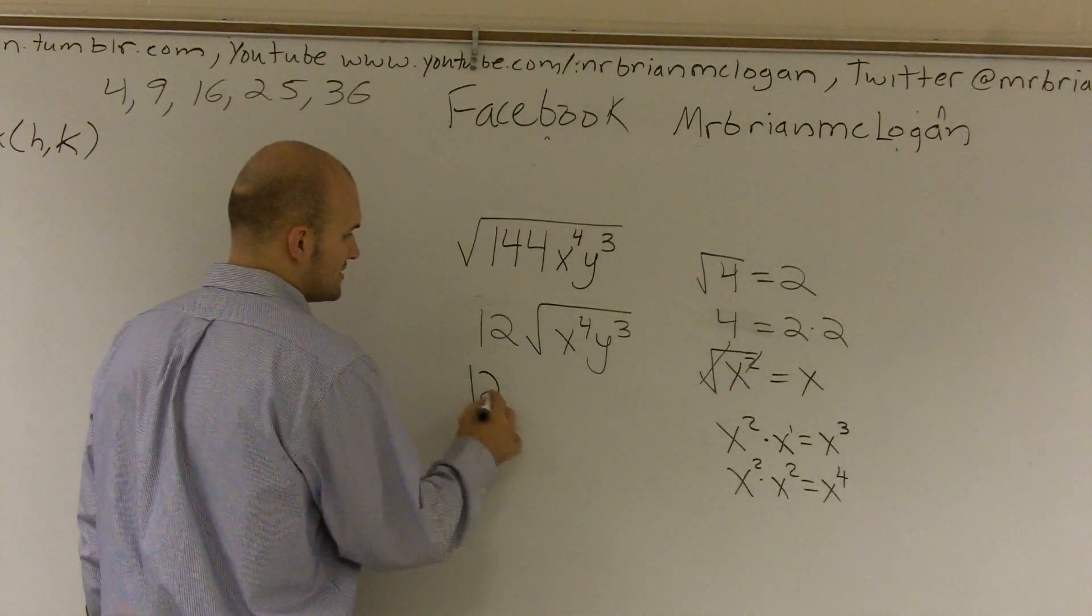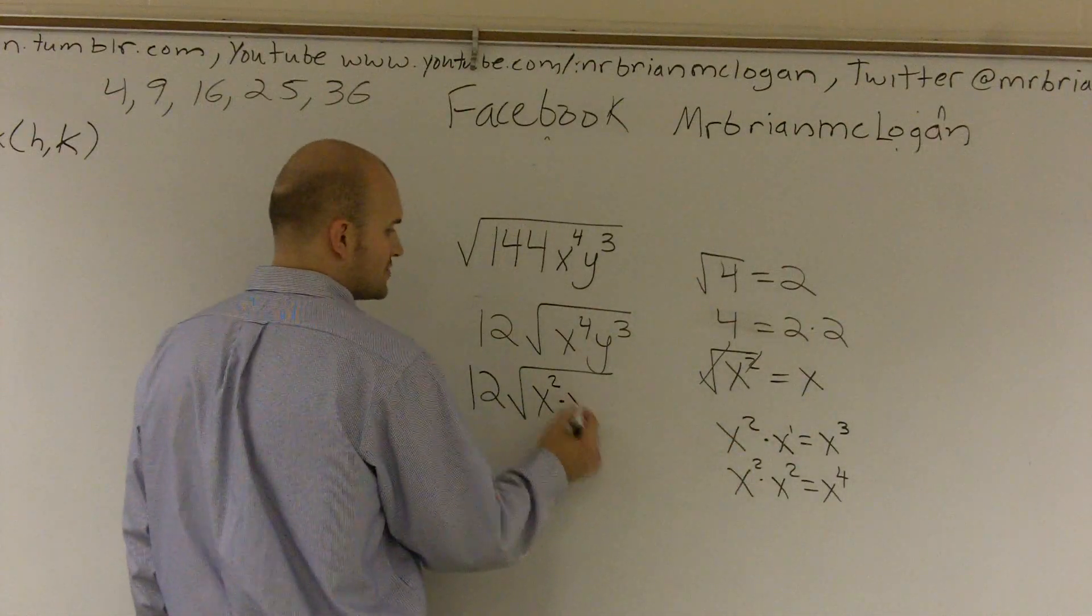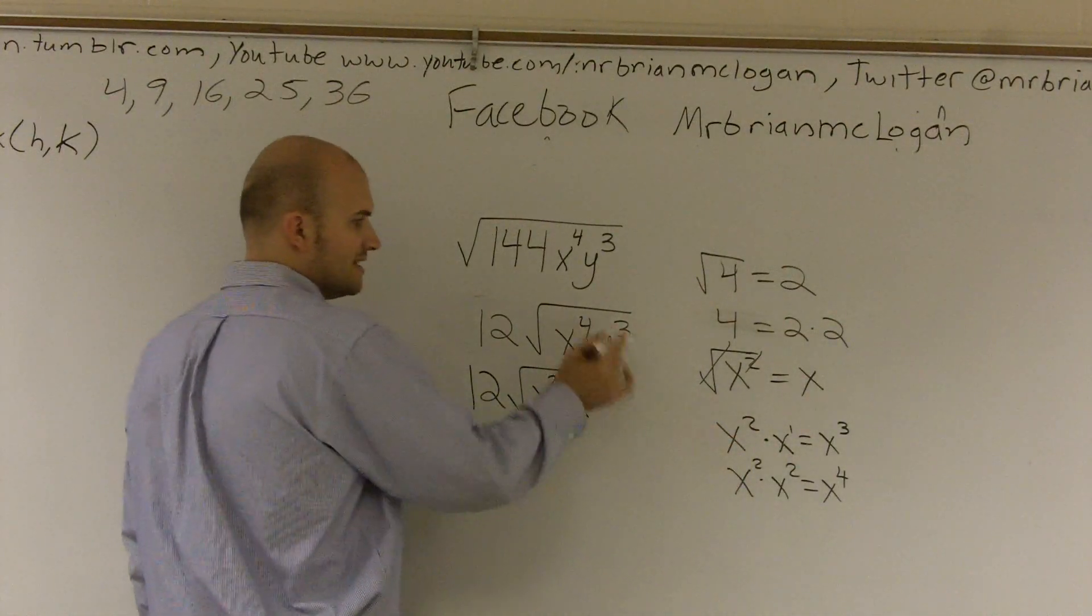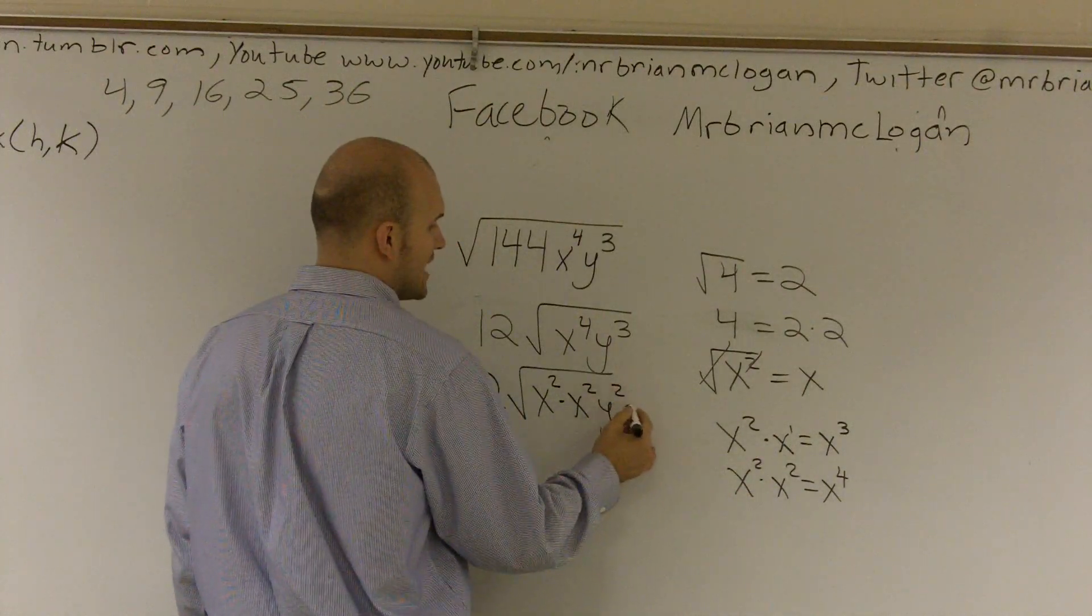So I'm going to rewrite this as 12 times square root of x squared times x squared. And then this y cubed, I can write as y squared times y.